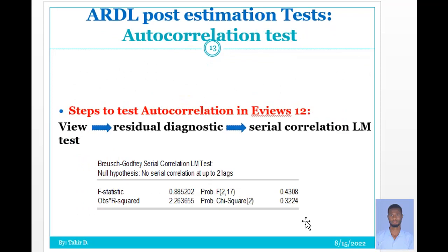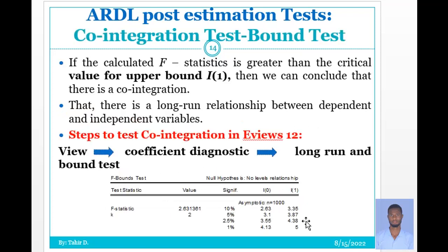The other pre-estimation test is the autocorrelation test. The steps in EViews: View, then Residual Diagnostics, then Serial Correlation LM Test. When the result of the F-statistic and the observed R-squared is insignificant, the model is free from autocorrelation.